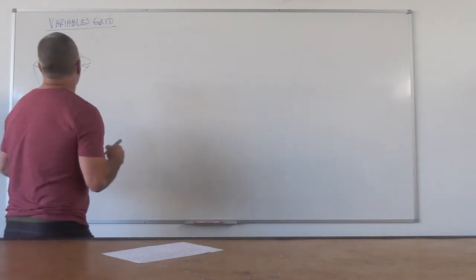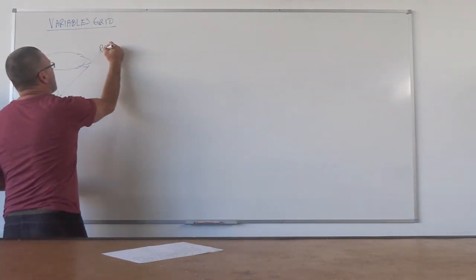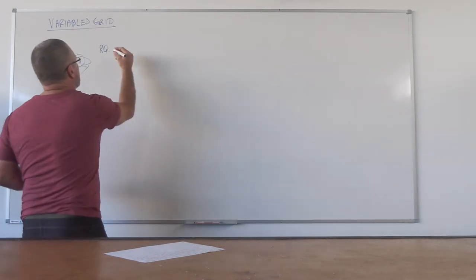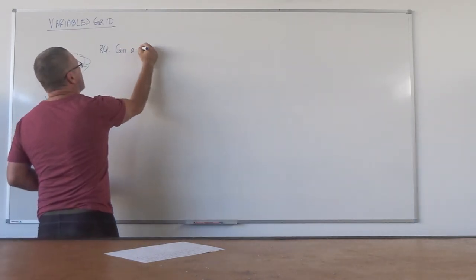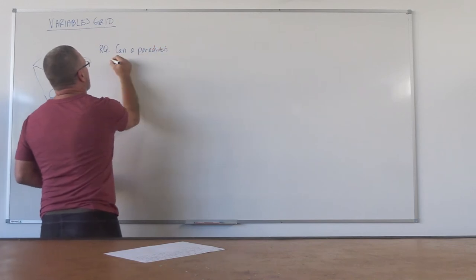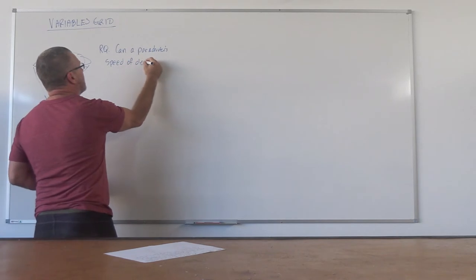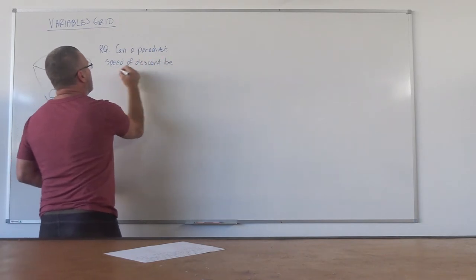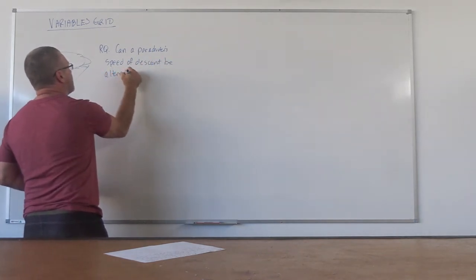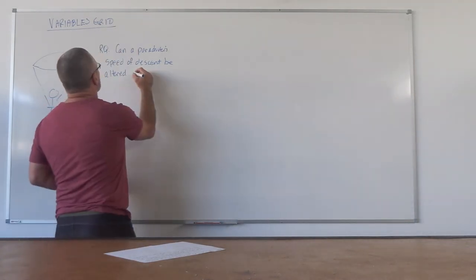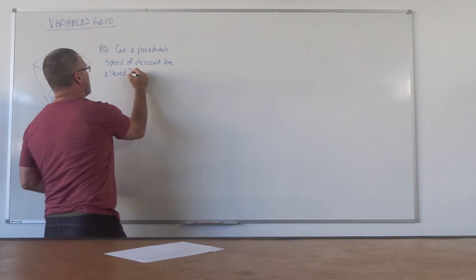So my research question, if we start off with that, is can a parachuter's speed of descent be altered at all? I guess be altered.